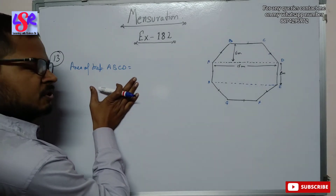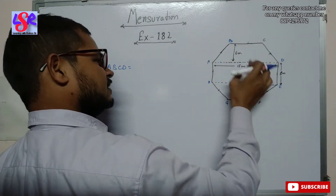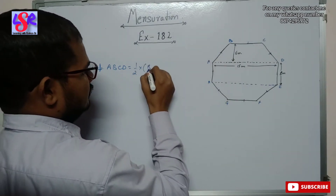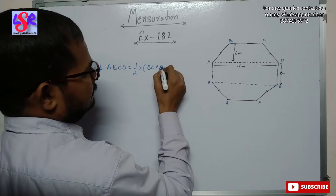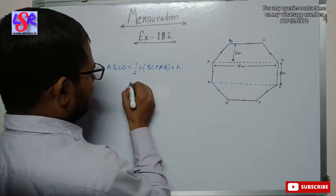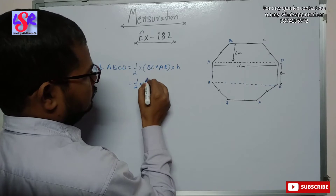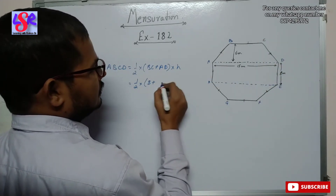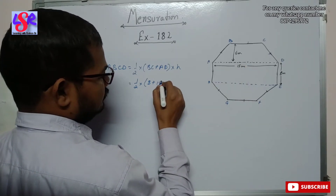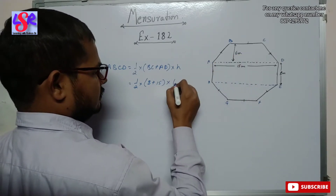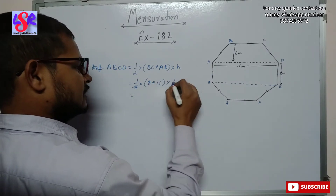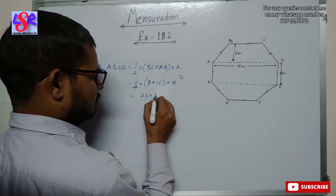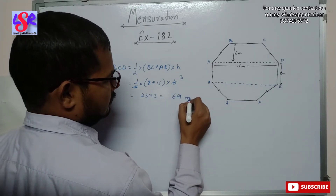The area of trapezium ABCD is half into sum of parallel sides into height. So this is 1/2 into (BC + AD) into height. BC is 8 meters and AD is 15 meters, and the height is 6 meters. So 2 cancels with 6 to give 3, and 8 plus 15 is 23, so 23 into 3 equals 69 square meters.